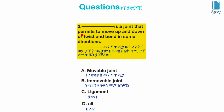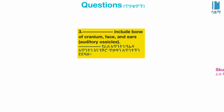Next question: A joint that permits movement up and down or twist and bend in some directions is called what? Options: A) movable joints, B) immovable joint, C) ligaments, D) hullum. The answer is A, movable joints.